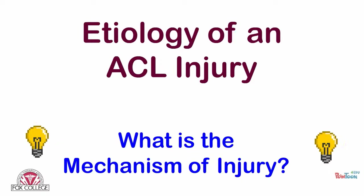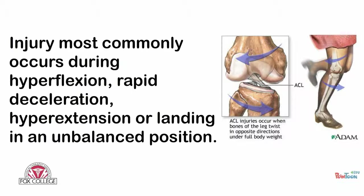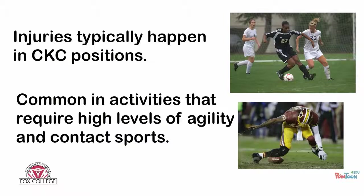What is the mechanism of injury for an ACL? Most commonly, it occurs in a closed kinetic chain manner consisting of hyperflexion, rapid deceleration, hyperextension, or landing in an unbalanced position. Typically, it happens in closed kinetic chain positions with contact sports or activities that require high levels of agility.